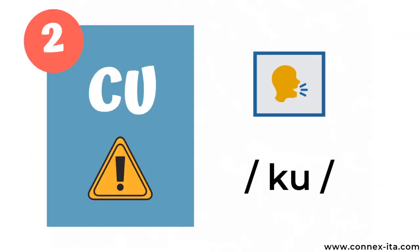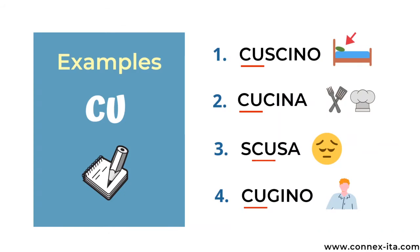Now let's move on to the sound Q written with the letter C rather than the letter Q. As you can see, the pronunciation is exactly the same. For instance: cuscino — cuscino means pillow. Cucina — cucina is the kitchen. Scusa — scusa is the Italian word for sorry. And cugino — cugino means cousin.